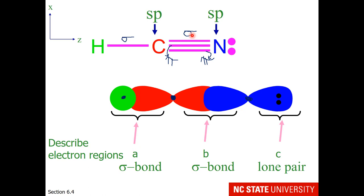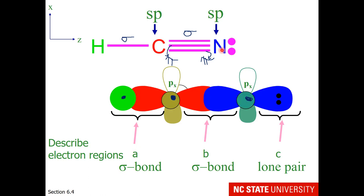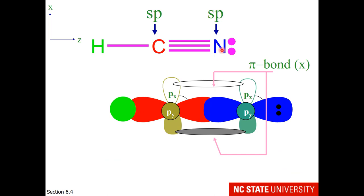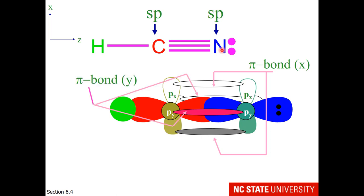This triple bond has one sigma, which we've counted for, and two pi bonds. So if carbon and nitrogen are sp hybridized, there must be two unhybridized p orbitals left over. I'm going to show the px orbitals, which are above and below the carbon and nitrogen atoms, and the py orbitals, which are coming out of the screen and going back into the screen. The overlap of the px unhybridized orbitals makes one pi bond in the x direction, and the overlap of the py unhybridized orbitals makes another pi bond in the y direction.